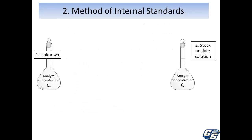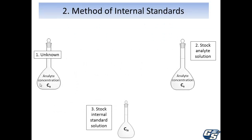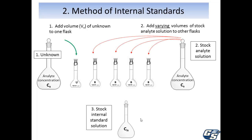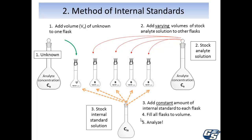The internal standard procedure looks a lot like the external standards method until you bring in a stock solution of the internal standard at a known concentration. You have the same set of flasks — add some of the unknown to one flask, and add variable volumes of the stock solution of the analyte to the other flasks. Then, critically, you add a constant amount of the internal standard to each flask, fill all the flasks to volume, and analyze.